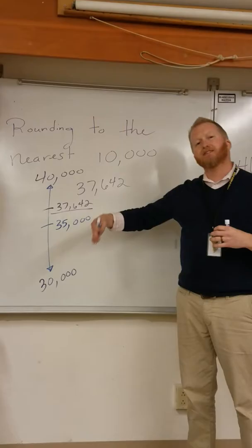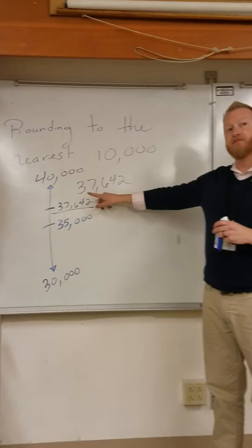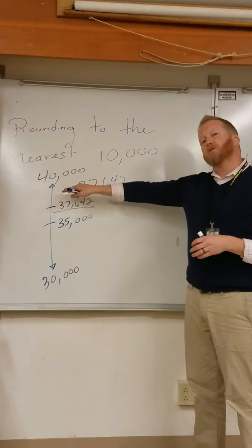This gives them the visual model of if we're rounding to the nearest 10,000, well, is that closer to 30,000 or is that closer to 40,000? It's a little bit different than how you and I learned it where they asked us to look one place value back. If that number is five or more, just round up. For some students that works.